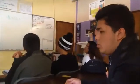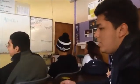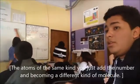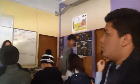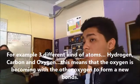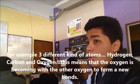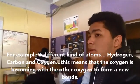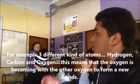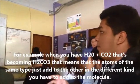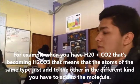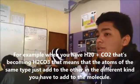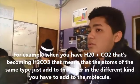Because the molecules are formed, and you can see the atoms of the same kind — you just add a number — and become another kind of molecule. For example, three different kinds of atoms: hydrogen, oxygen, carbon. The oxygen is becoming the oxygen in foreign new bonds. For example, if you have H2O and CO2, that's becoming H2CO3. That means that the atoms of the same type just add to the other, and the different kinds have to add to the molecule.